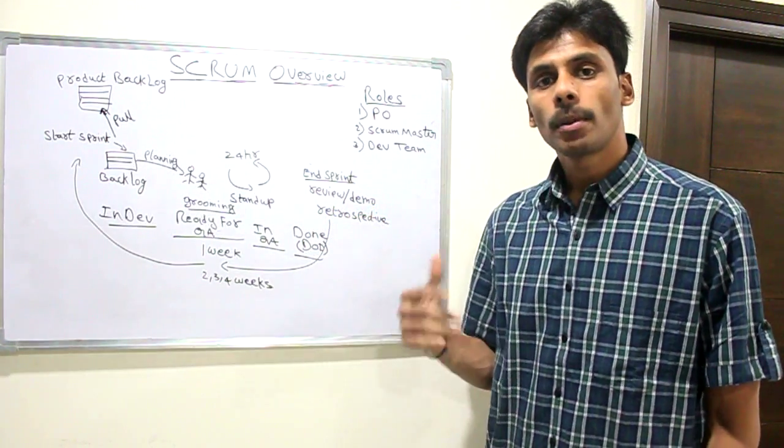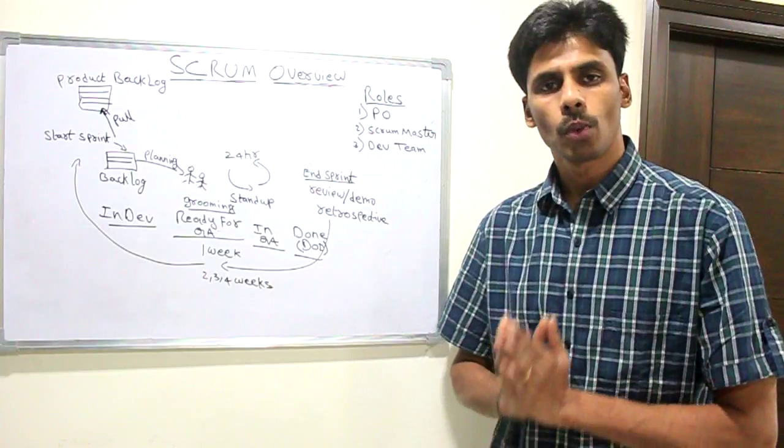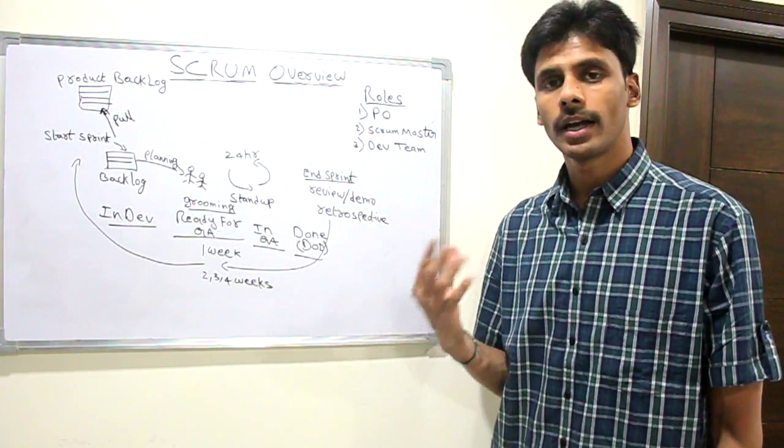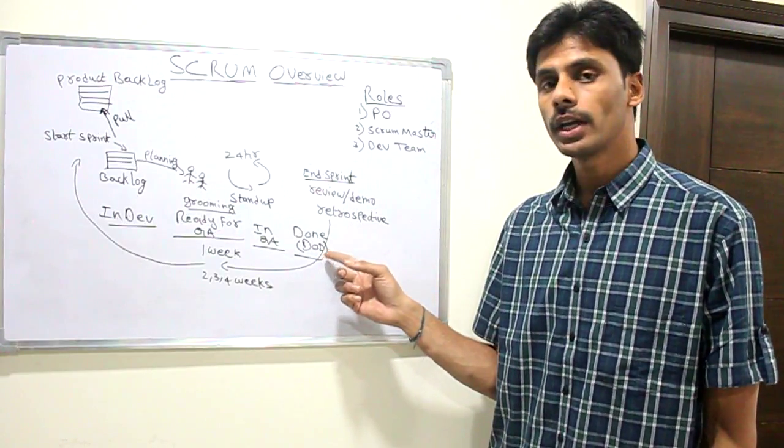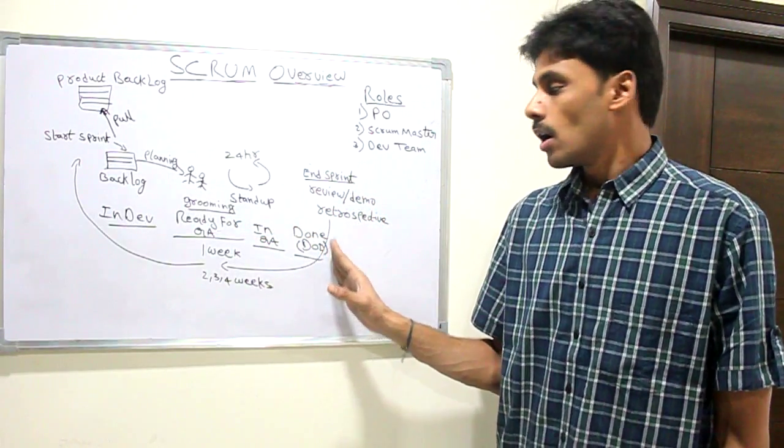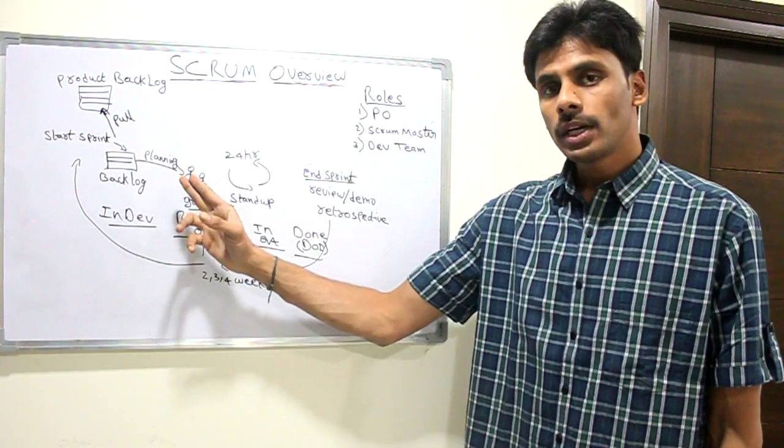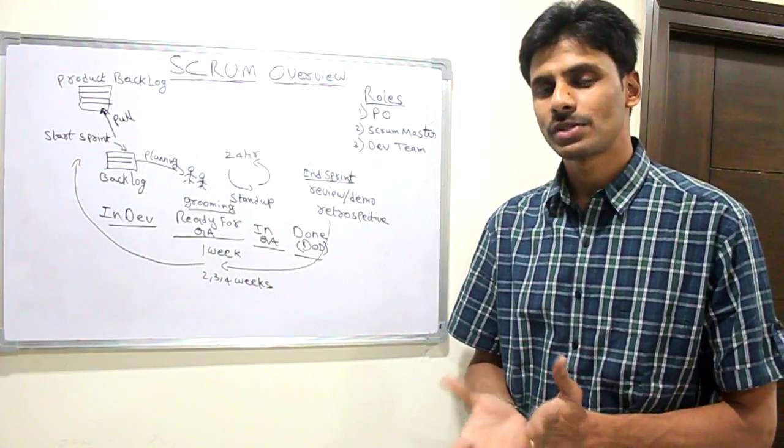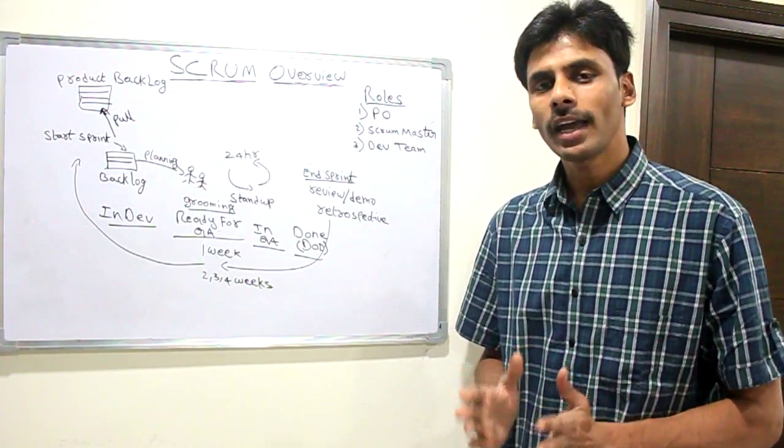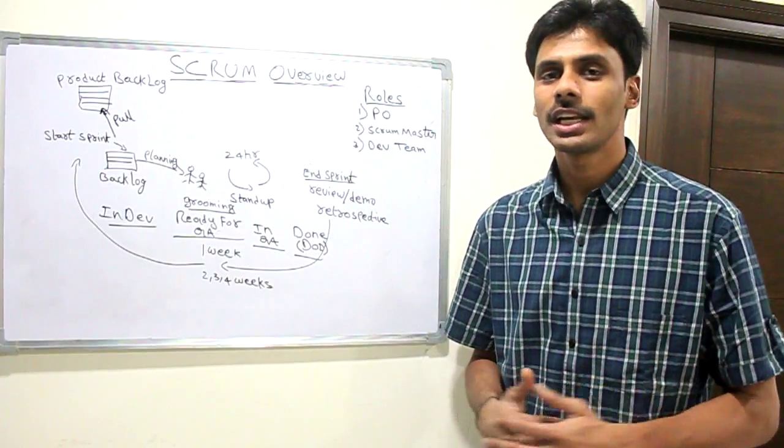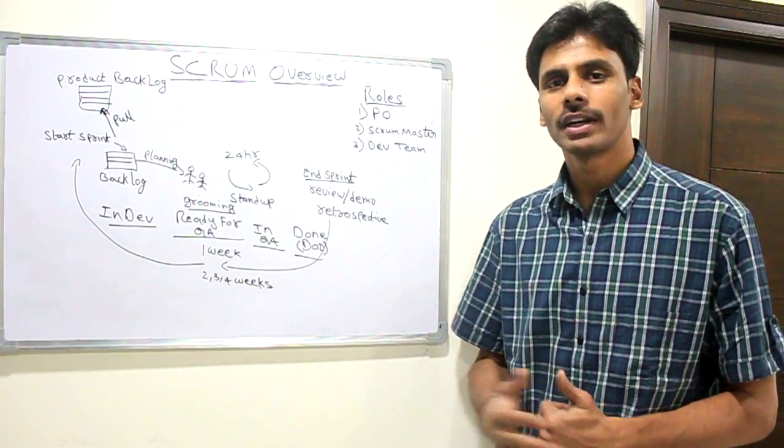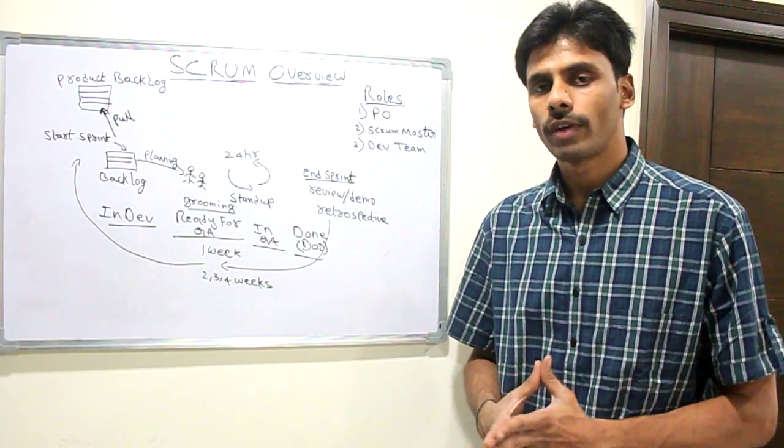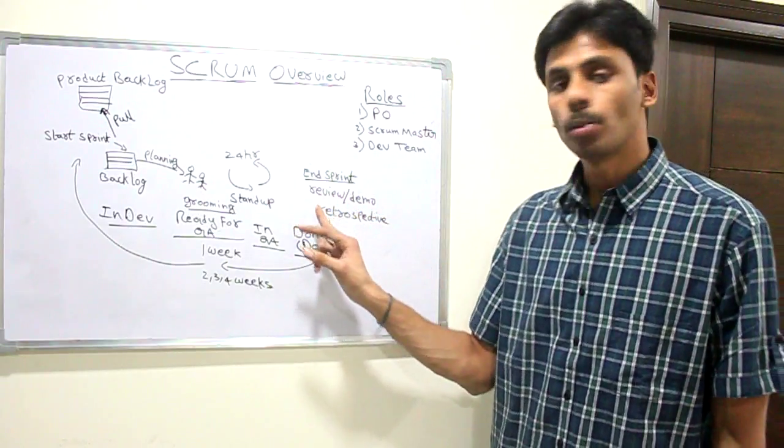In that review slash demo, the product owner is like our customer, wherein we will go and showcase all the work we have done in that sprint. If she agrees that the stories or the requirements we have done are good, as per the DOD, that will be moved to done state. If we take two stories in a sprint, both the stories should be finished in order for that sprint to be successful. Otherwise, we call it a failed sprint. It's okay to have two or three failed sprints initially when we kick off projects, but it's not a good thing if it continues. There is definitely something wrong. We have to go back and analyze what went wrong.